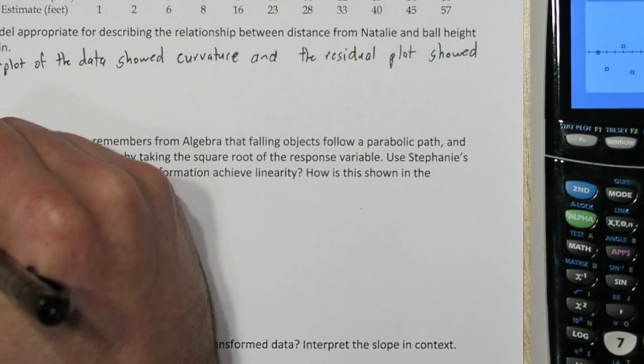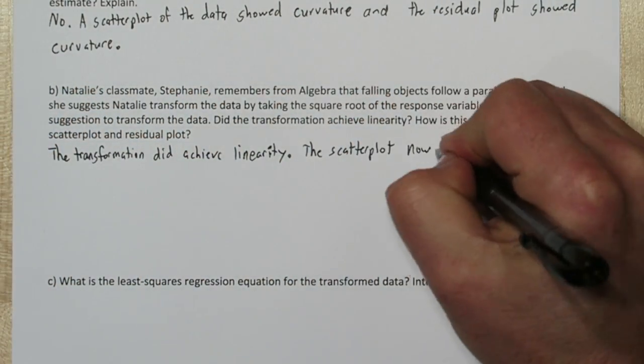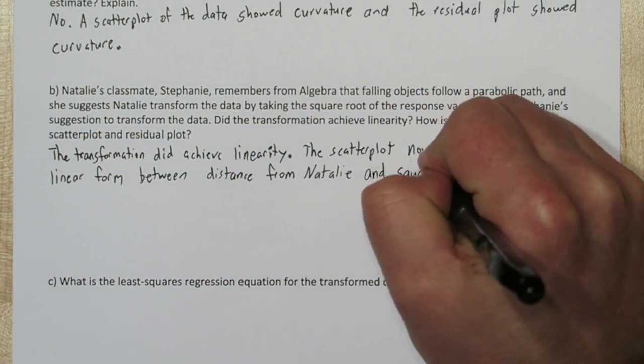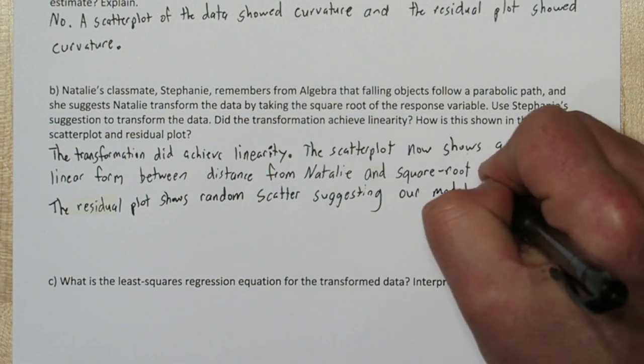So we're going to say the transformation did achieve linearity. The scatter plot now shows a strong linear form between distance from Natalie and the square root of the ball height. The residual plot shows random scatter, suggesting our model is appropriate.